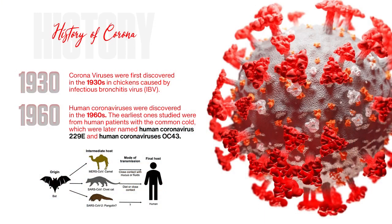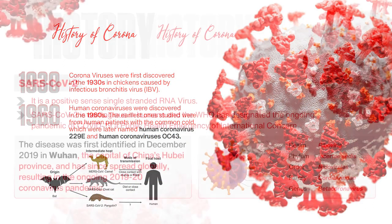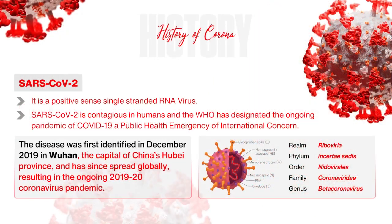Where does this virus get its origin? The disease was first identified in December 2019 in Wuhan, the capital of China's Hubei province, and has since spread globally, resulting in the ongoing 2019 coronavirus pandemic.